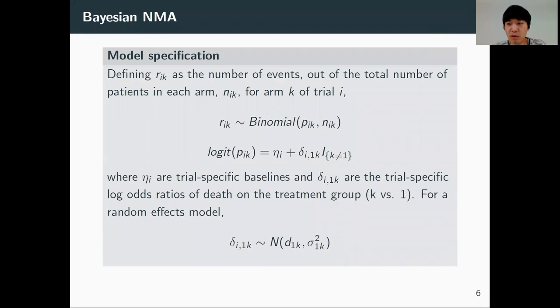We will briefly go over the Bayesian NMA model. Since our dataset is binomial, we fit a binomial model. The i refers to the trial, the k refers to the arm. The link function is eta_i plus delta_i1k. Eta_i are the trial-specific baselines, and delta_i1k are the trial-specific treatment effects.